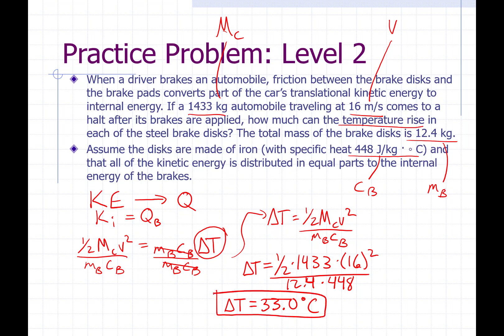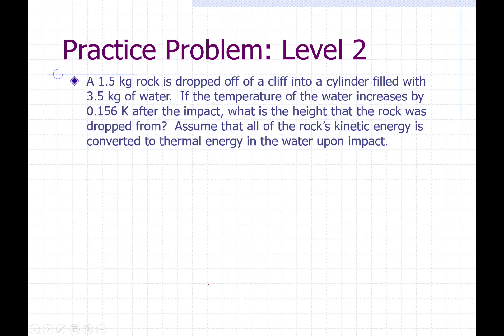That's a pretty significant temperature increase. It's unlikely that all of that kinetic energy goes into the brake disc, but that's the maximum possible temperature increase. Problem number four: a 1.5 kilogram rock is dropped off a cliff into a cylinder filled with 3.5 kilograms of water. If the temperature of the water increases by 0.156 Kelvins after the impact, what is the height that the rock was dropped from? Assume that all of the rock's kinetic energy is converted to thermal energy in the water upon impact.